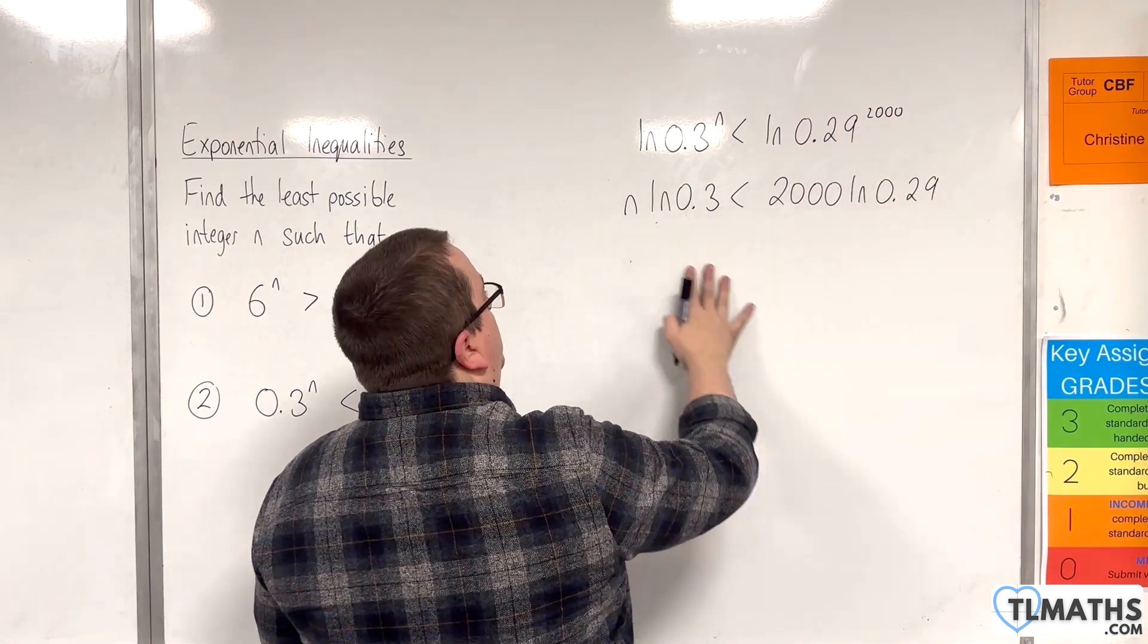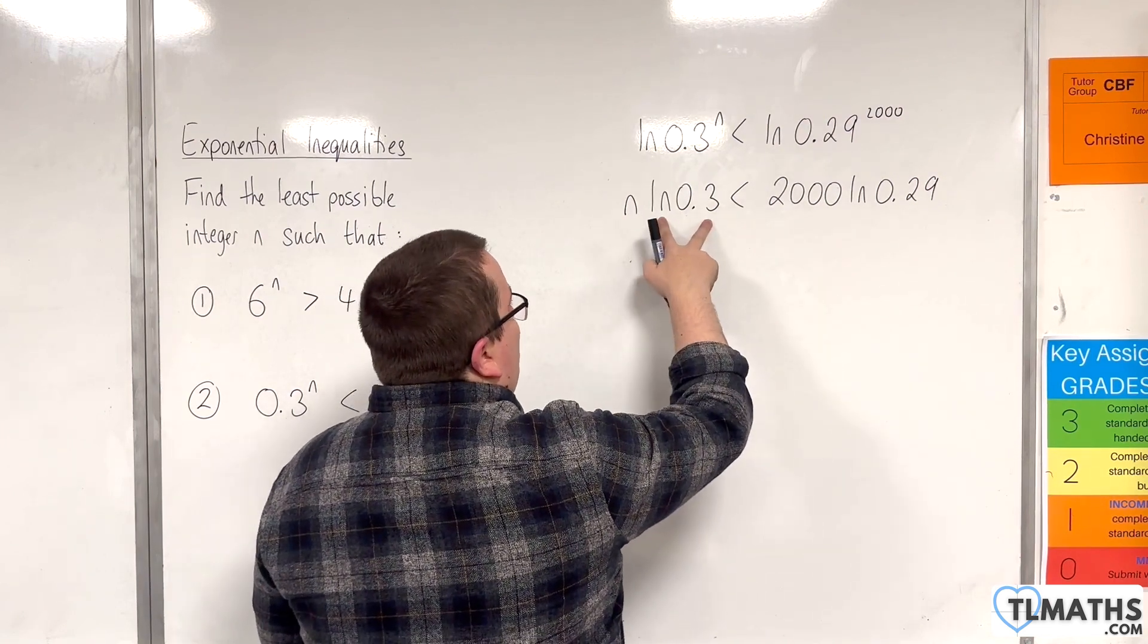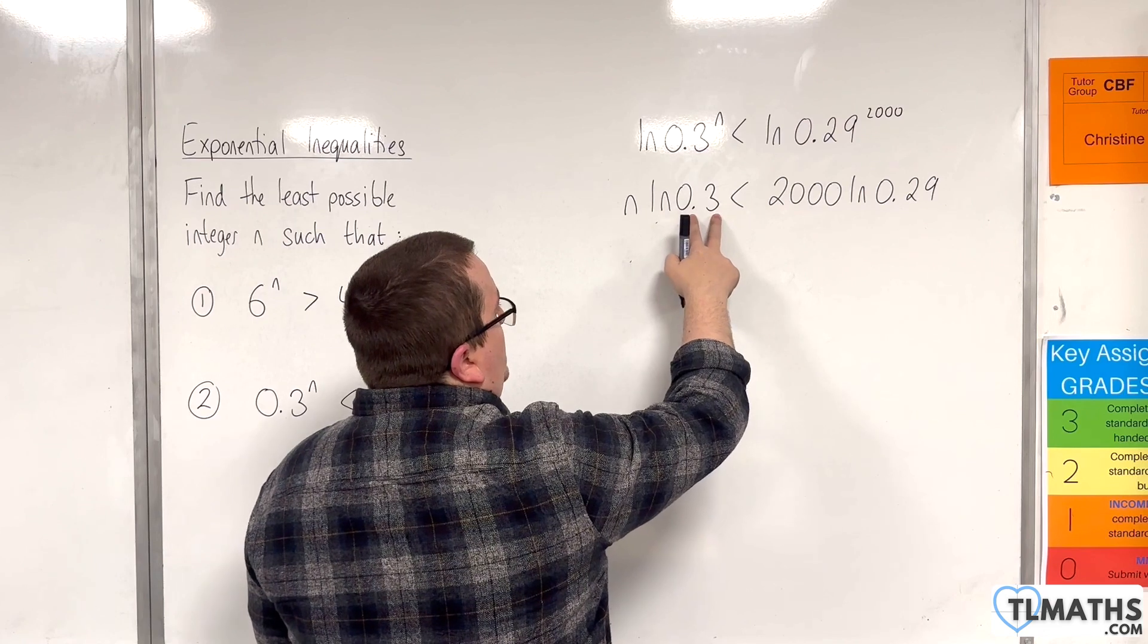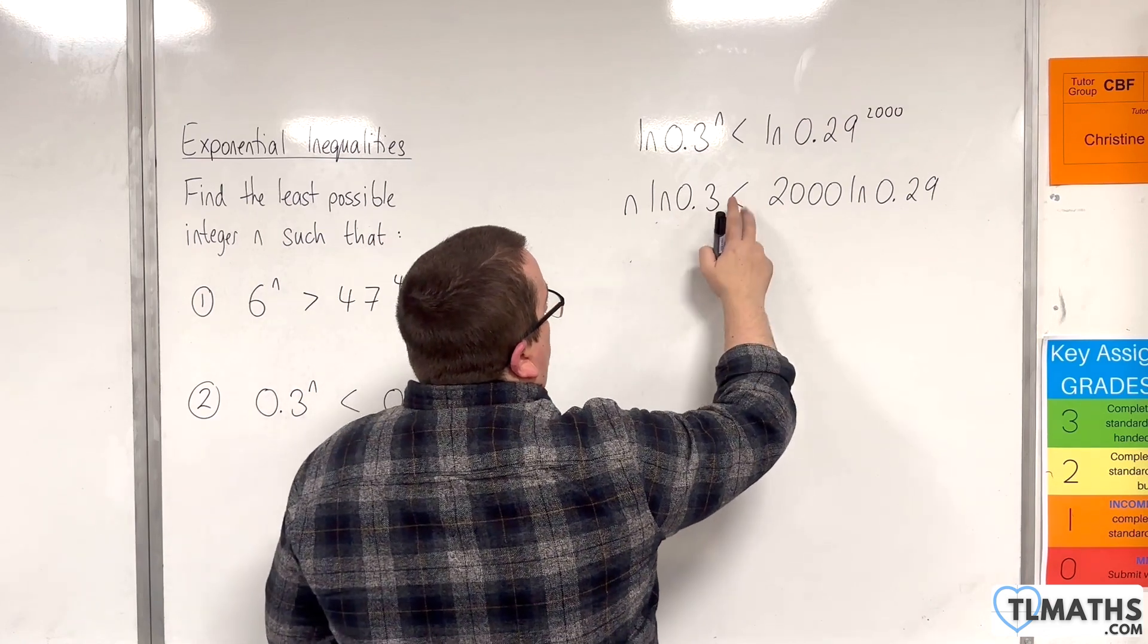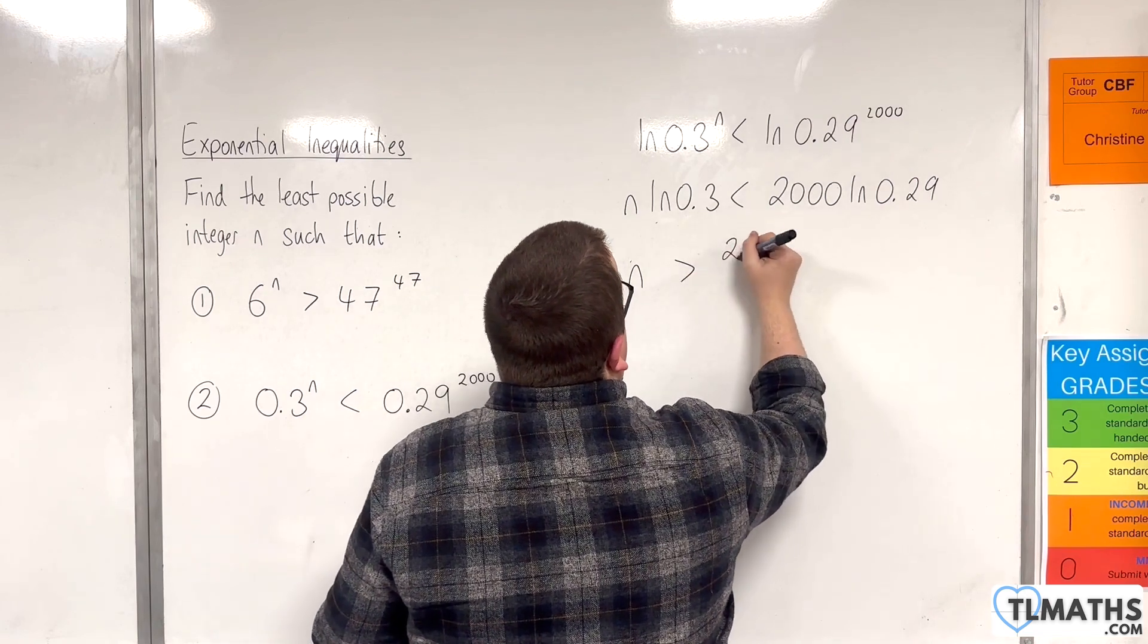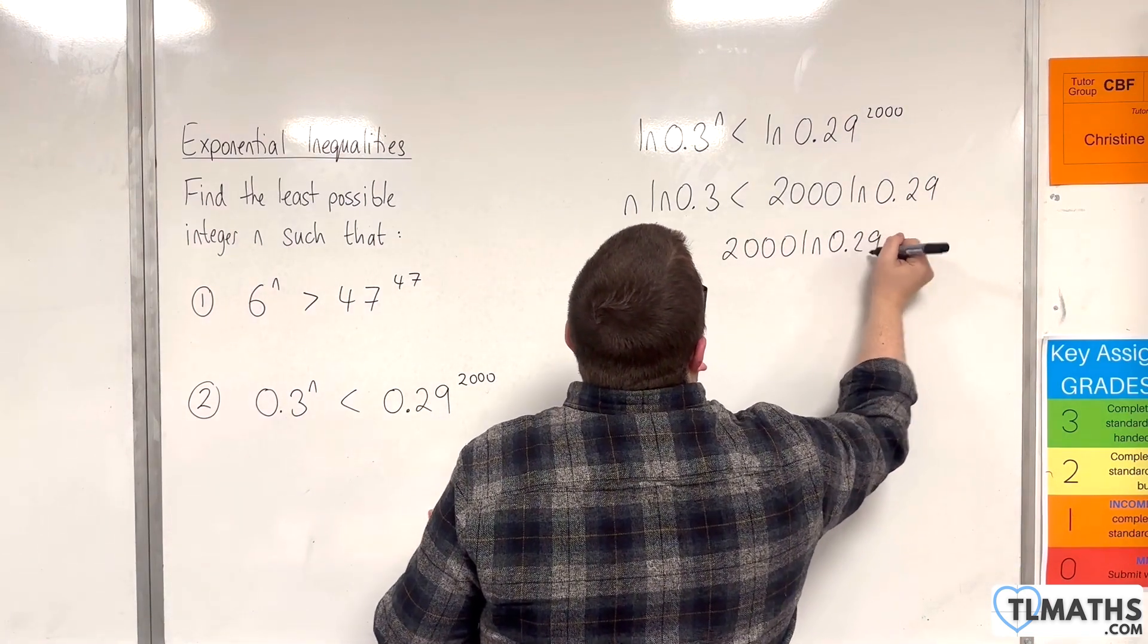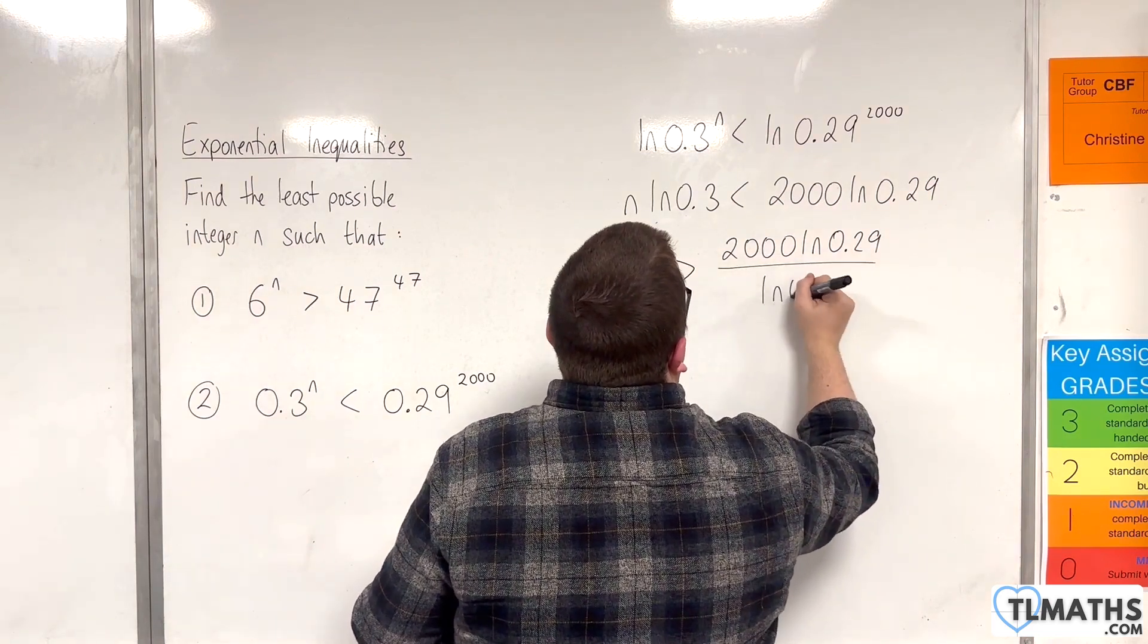And then I'm going to divide both sides by the natural log of 0.3, which is a negative value because this number is between 0 and 1. So that's going to change the direction of the inequality sign. So n will be greater than 2000 natural log of 0.29 divided by the natural log of 0.3.